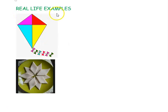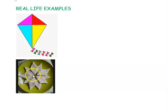Real-life examples of a kite include the actual kite we fly, which is a classic example of the kite shape. Another example is kaju katli, the diamond-shaped sweet, which is more or less in the shape of a kite.